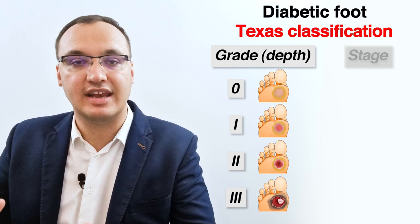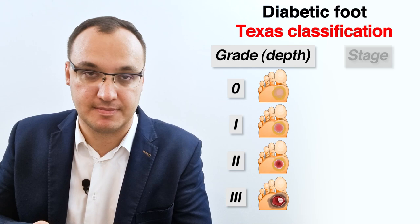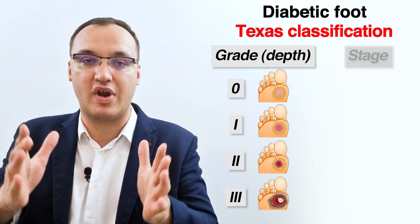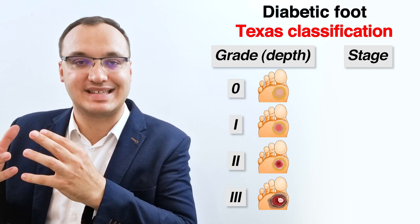If we go below to the joints, then we have grade two. And if we see bones, or if we can probe bones, then we have grade three. So you look at the patient's foot — that is the first thing you do as a doctor — and you grade them from zero to three.